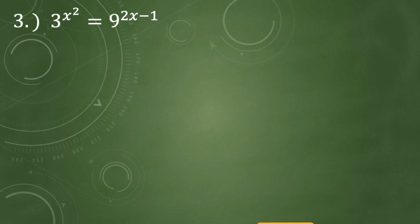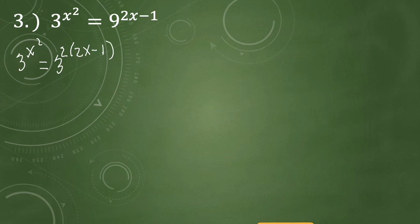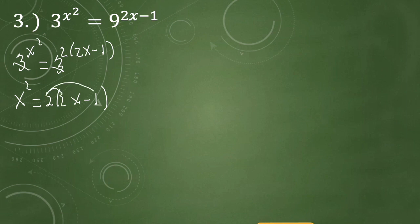For example number 3, we have 3 raised to x squared equals 9 raised to 2x minus 1. Let's express 9 as 3 raised to the 2nd power, so it becomes 3 raised to 2 times 2x minus 1. We can now drop the base, leaving us with x squared equals 2 times 2x minus 1. Distributing gives x squared equals 4x minus 2.